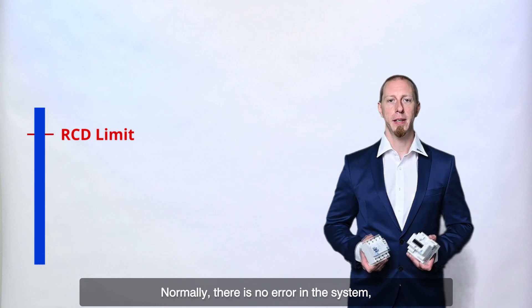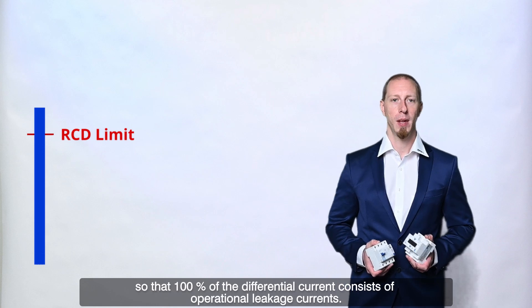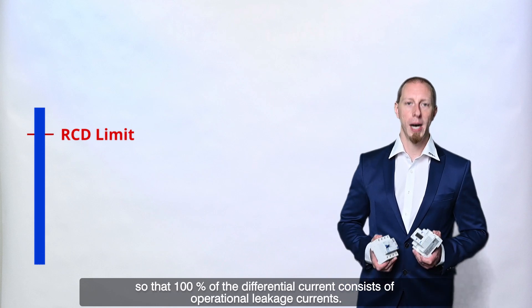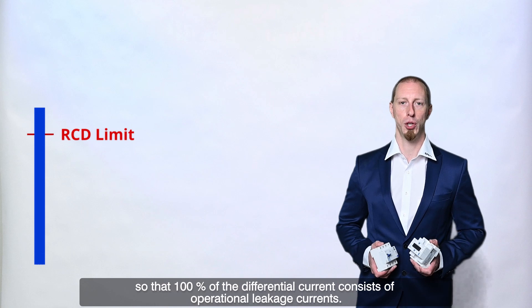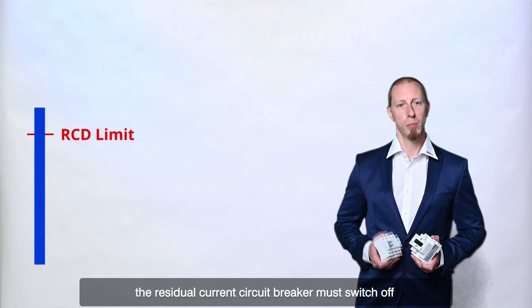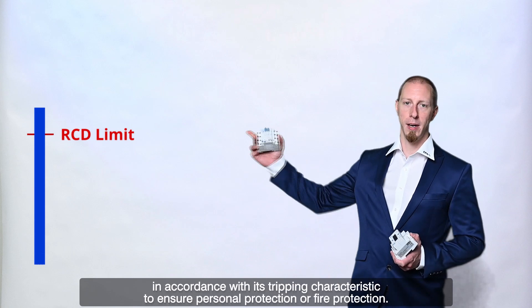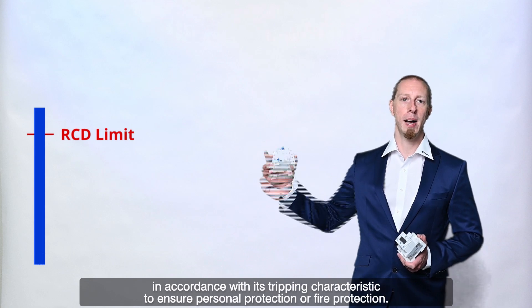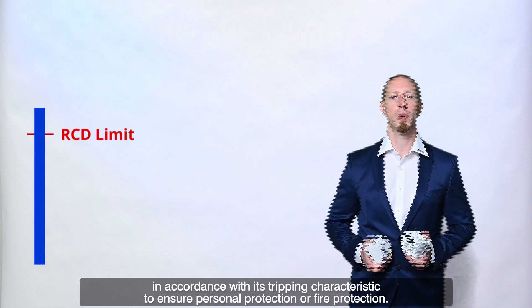Normally, there is no error in the system. So that 100% of the differential current consists of operational leakage currents. If these currents reach a certain level, the residual current circuit breaker must switch off in accordance with its tripping characteristic to ensure personal protection or fire protection.